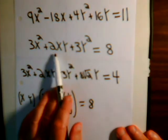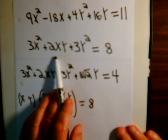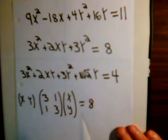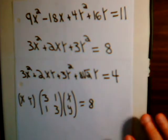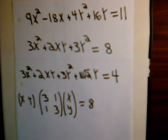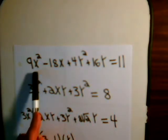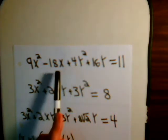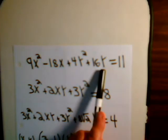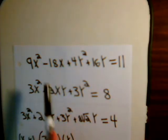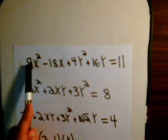This xy term, then, results in a rotation of our coordinate axis. Now, in the, I think it was video number 38, we dealt with this equation. There's an x squared term, a y squared term, an x term, and a y term, but no xy term. So this was just simply a translation of our xy system.